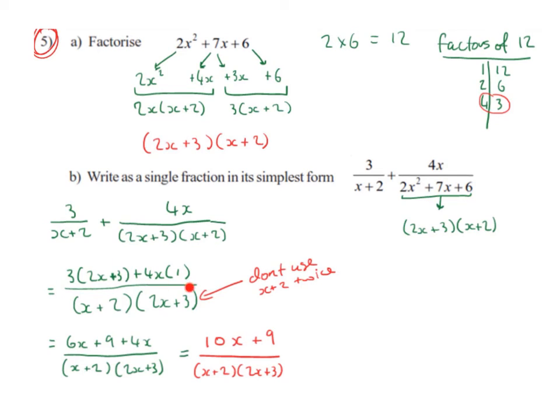So then we multiply out the top line: 3 by 2x is 6x, 3 by 3 is 9, and 4x by 1 is 4x. 6x plus 4x is 10x and the 9 just stays as 9, and all of this is over x plus 2 multiplied by 2x plus 3.